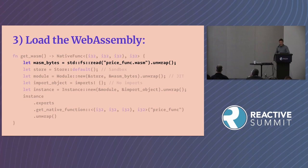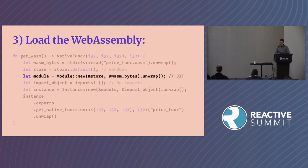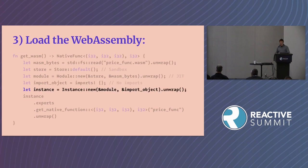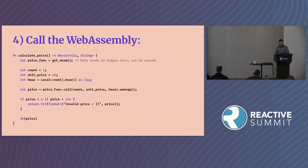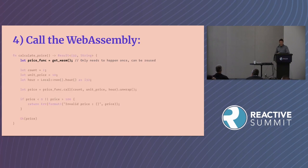The first step is to load the WebAssembly binary, then create the WebAssembly sandbox, and then compile the WebAssembly — this is the JIT compilation step. The price function has no imports from the host, so we're not sharing variables from the host into that WebAssembly function. We create the instance, then import the price function by calling the `get_native` function. The last step is to actually use that extracted function: we call a method that loads the WebAssembly, compiles it, and returns that price function.